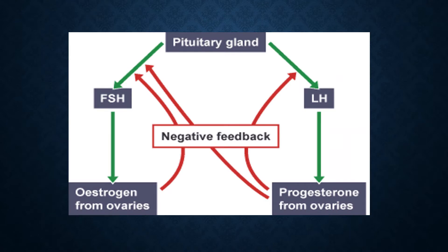A feedback mechanism is the process through which the level of one substance influences the level of another substance. A negative feedback affects the production of hormones in the menstrual cycle. High levels of one hormone may inhibit the production of another hormone.